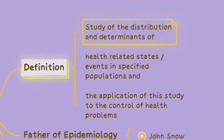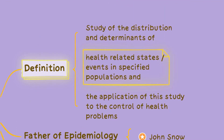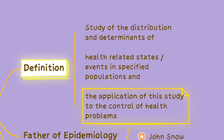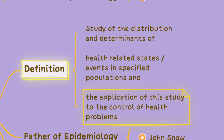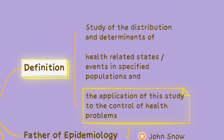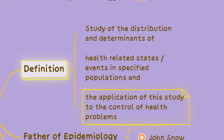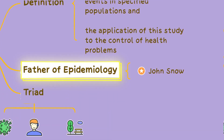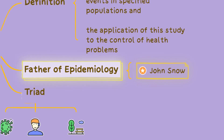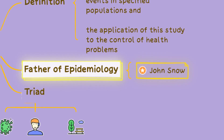Epidemiology is the study of distribution and determinants of health-related states or events in specified populations. It involves analyzing patterns, causes and impacts of diseases and other health outcomes to inform public health interventions and control measures. Considered the father of epidemiology, John Snow made significant contributions to the field in the 19th century.